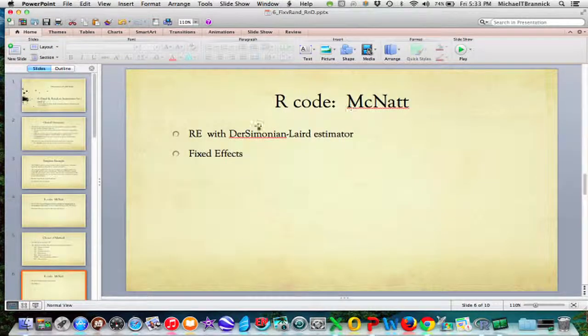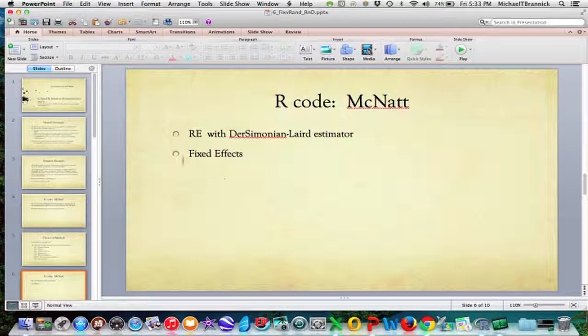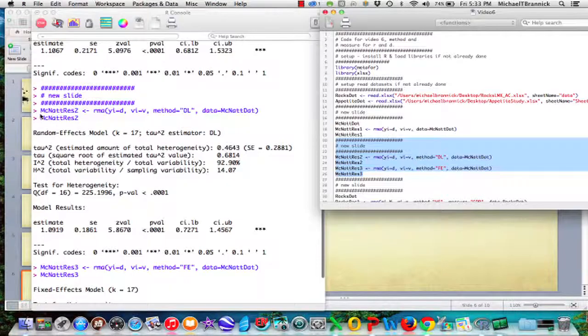Now I'm going to show you McNatt again. But this time I'm going to do random effects with Dersimonian and Laird instead of restricted maximum likelihood. And then I'm going to run the thing one more time, but I'm going to do fixed effects instead. So McNatt results 2 gets RMA. Y sub i is D again. V sub i is V again.